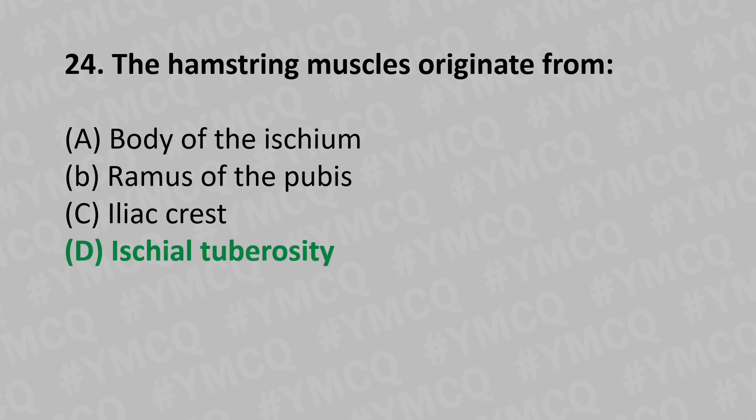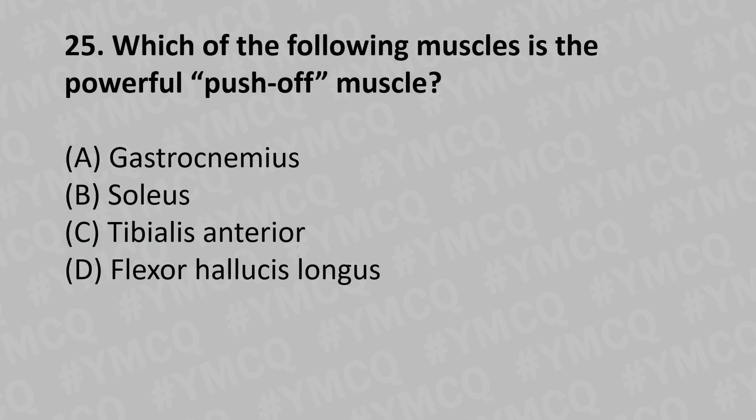Moving to our 25th question: which of the following muscles is the powerful push-off muscle? Option A: gastrocnemius, Option B: soleus, Option C: tibialis anterior, Option D: flexor hallucis longus. And the answer is Option D: flexor hallucis longus.